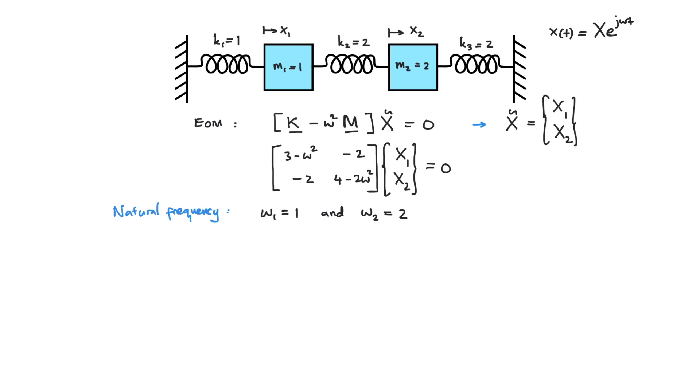So we can choose either one of the equations of motion and substitute its natural frequency to obtain the relations between x1 and x2, which are the eigenvectors. Let's say we choose the first equation of motion, therefore we have 3 minus omega square x1 minus 2 x2 equals to 0. Now if we substitute the first natural frequency, which is omega equals to 1, we have 2 x1 minus 2 x2 equals to 0.